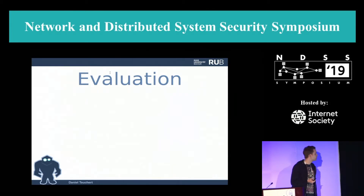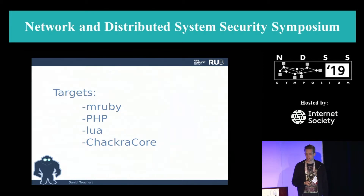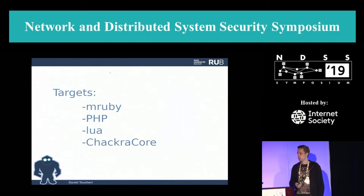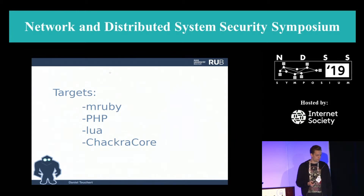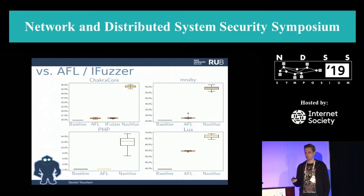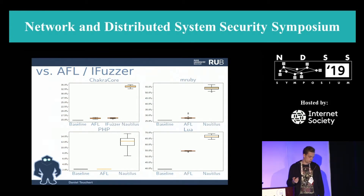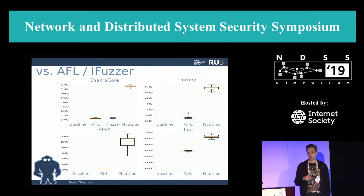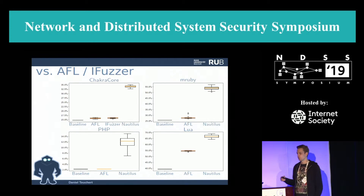After implementing the fuzzer, we evaluated it. We picked four targets and wrote custom grammars: mruby, PHP, Lua, and ChakraCore — the JavaScript engine used in Edge. We compared against other fuzzers on branch coverage percentage. The other fuzzers hardly improved over the baseline, except for Lua where AFL found significant coverage. The baseline was a thousand randomly grammar-generated inputs; we also gave all other fuzzers the full set of strings from the grammar as a dictionary.